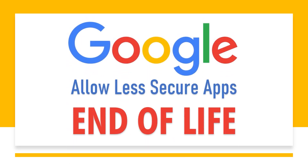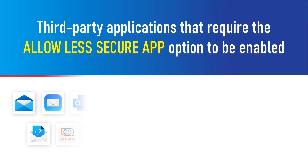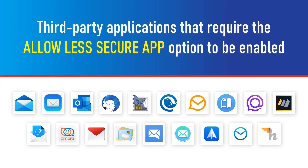Have you heard the news? According to Google's announcement, less secure apps access will no longer be available in Gmail on Google accounts starting on May 30, 2022. When you use the Gmail app, you may use your Google login and password to log into other devices and services. Until today, it was possible to use Gmail SMTP with this option enabled to send emails from third-party app services. As of right now, Google has made the decision to remove less secure apps access starting on May 30, 2022.